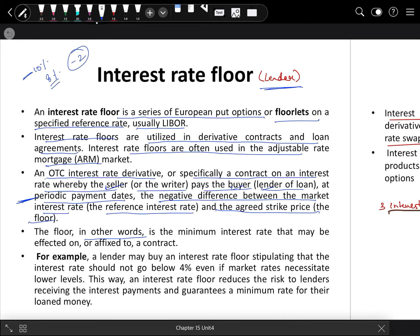The floor, in other words, is the minimum interest rate that may be affected on or affixed to a contract. For example, a lender may buy an interest rate floor stipulating that the interest rate should not go below 4%, even if market rates necessitate lower levels. This way, an interest rate floor reduces the risk to lenders receiving the interest payment and guarantees a minimum rate of return on their loaned money.